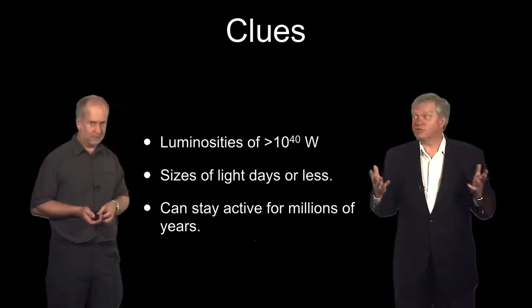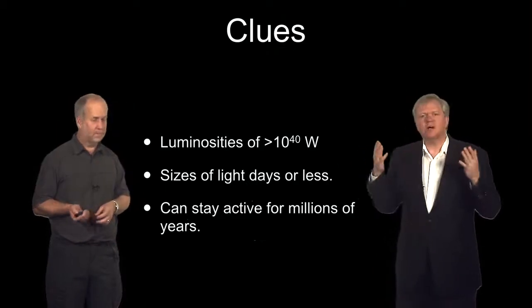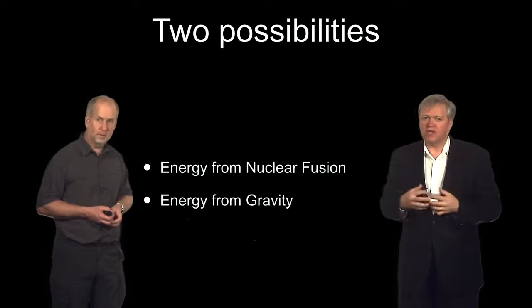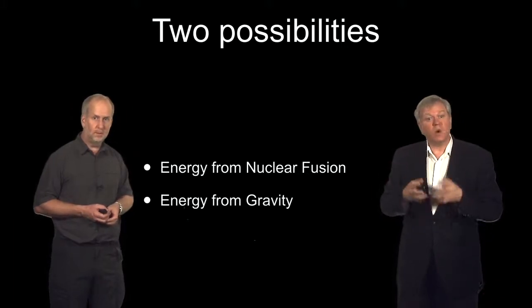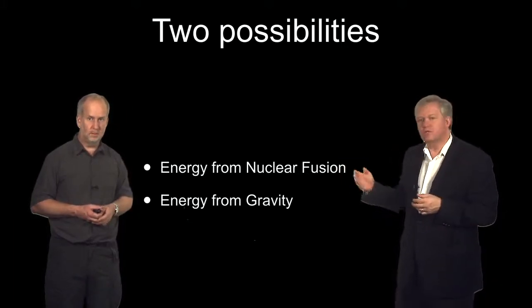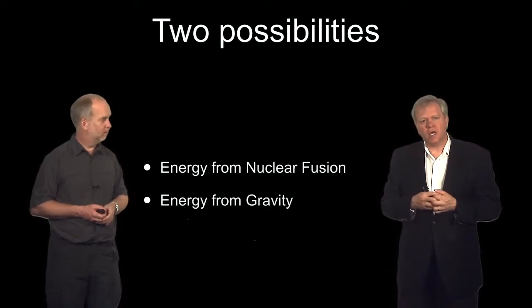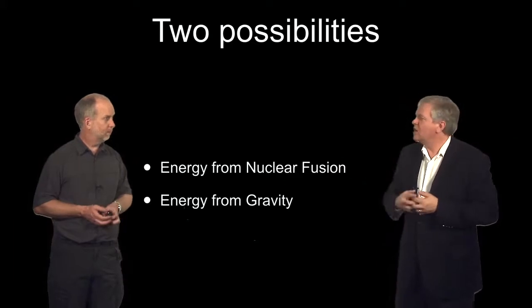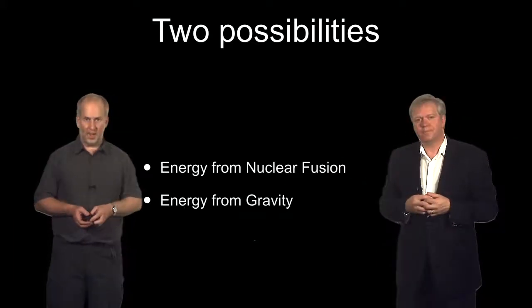Well, we're going to need a lot of energy. That's pretty clear. So let's think of our energy sources. Now there are two ways to get lots of energy out in the universe. One is the way our sun does it, nuclear fusion. And the other way, the way our sun got started, is energy from gravity. So Paul, why don't you have a little look at those two sources? Okay. We'll be right back.